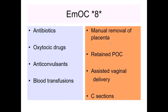Emergency obstetrical care services have eight major important components. Number one is intravenous or intramuscular administration of antibiotics, particularly if infection is moving towards sepsis. Then introduction of oxytocic drugs through intravenous route, anticonvulsants by infusions — these cannot be given at the basic health unit and rural health center, requiring referral to a higher facility such as a Tehsil headquarter hospital or district headquarter hospital.